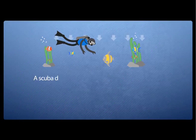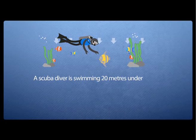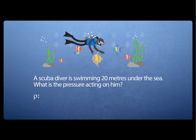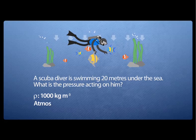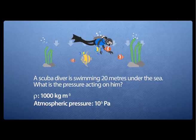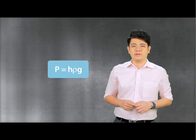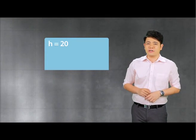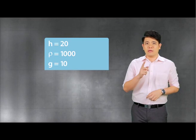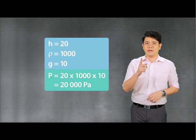Let's look at another popular question. A scuba diver is swimming 20 meters under the sea. What is the pressure acting on him? Given the density of water is 1000 and the atmospheric pressure is 10 to the power of 5 Pascals. It's very easy — just use the formula P equals H rho G. Insert H as 20, rho as 1000, G as 10. That gives you 20,000 Pascals.